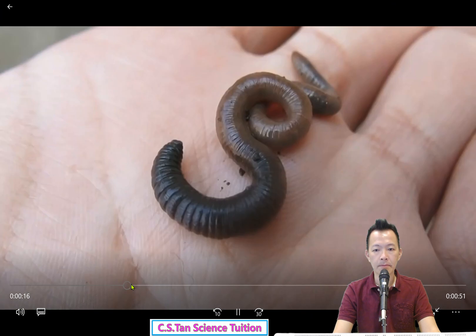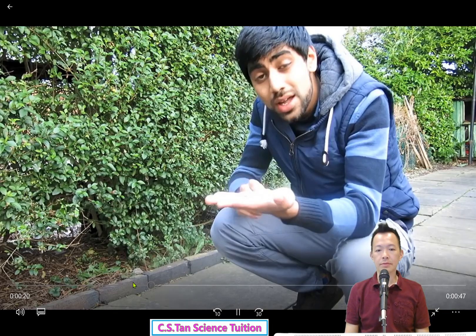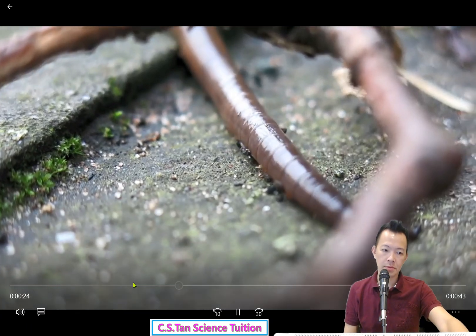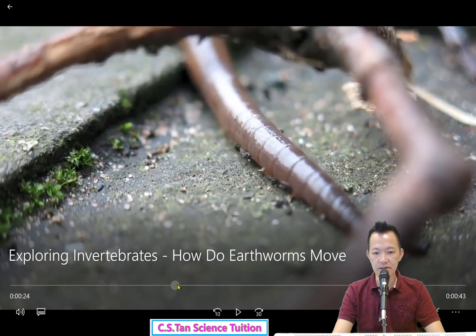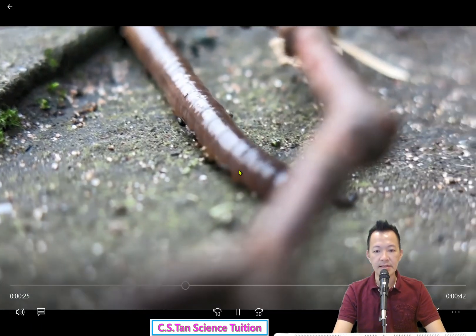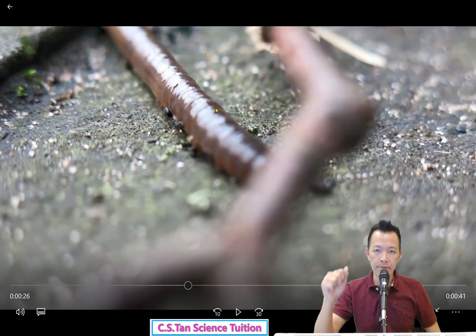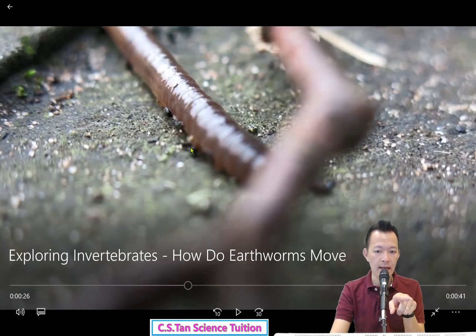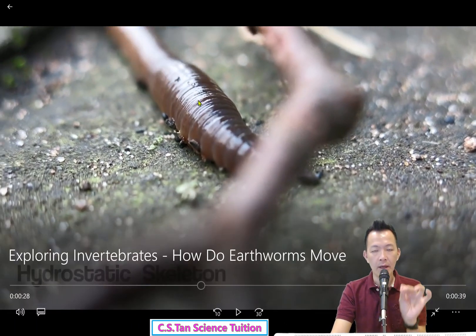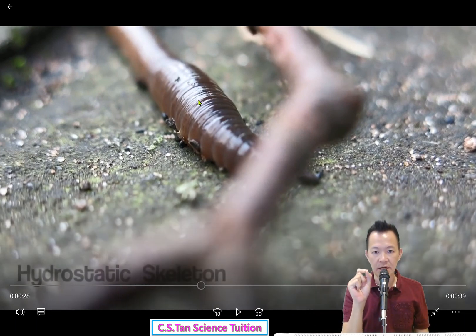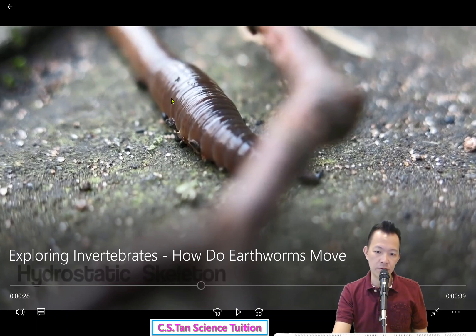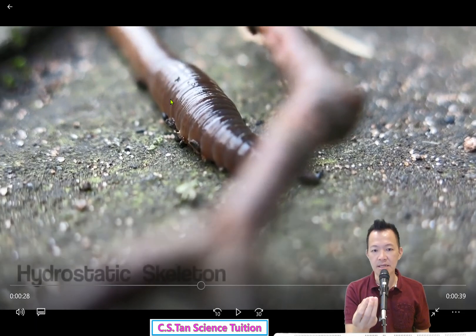Let's watch the video. The earthworm's body is smooth with no external organs visible. It moves using what's called a hydrostatic skeleton. When the circular muscle contracts and the longitudinal muscle relaxes, the body becomes thinner and longer and moves forward, with the setae anchoring on the ground. When the circular muscle relaxes and the longitudinal muscle contracts, the body becomes thicker and shorter and the posterior segment moves forward. The alternating contraction and relaxation produces a peristaltic movement that helps the earthworm move.